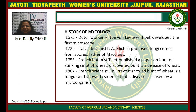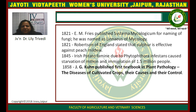In 1807, French scientist I.B. Prevost showed that bunt of wheat is caused by a fungus and showed evidence that the disease is caused by a micro-organism. In 1821, E.M. Fries published Systema Mycologicum for the naming of fungi; he was named the Linnaeus of mycology. Also in 1821, Robertson of England stated that sulphur is effective against peach mildew. In 1845, the Irish potato famine due to Phytophthora infestans caused the starvation of millions and emigration of 1.5 million people. In 1858, J.G. Kühn published the first textbook in plant pathology, The Diseases of Cultivated Crops: Their Causes and Their Control.